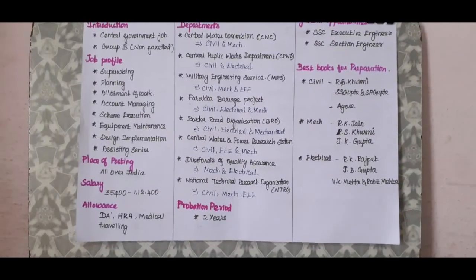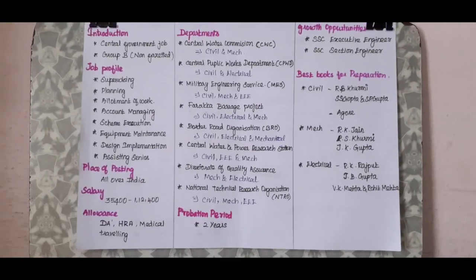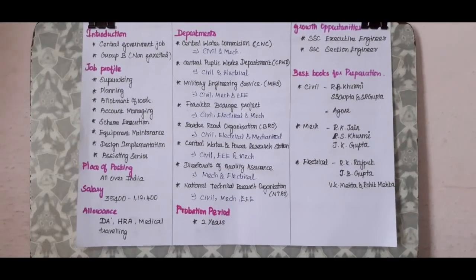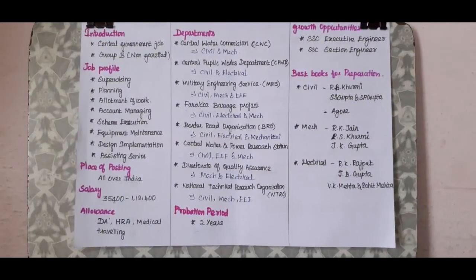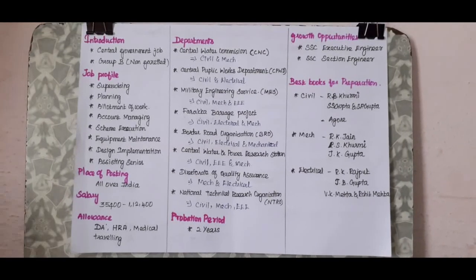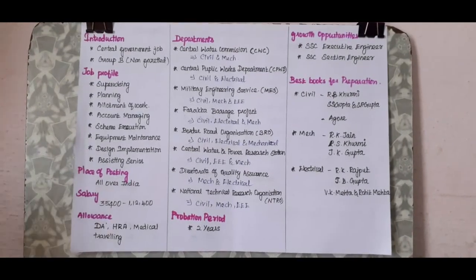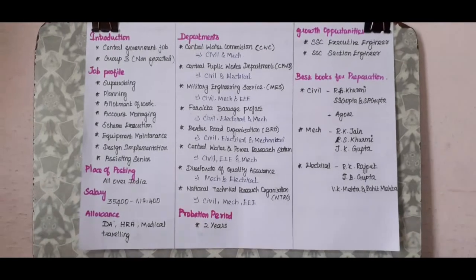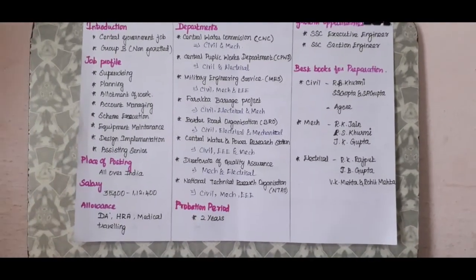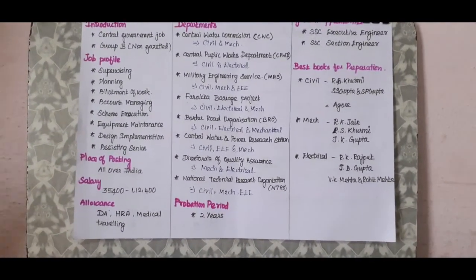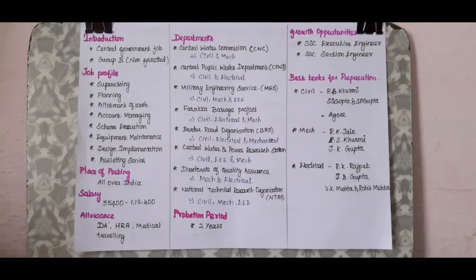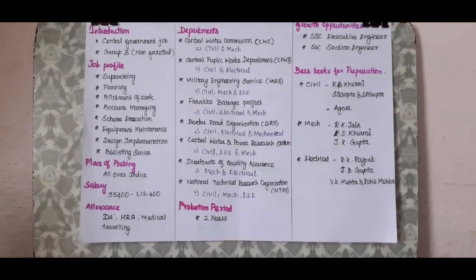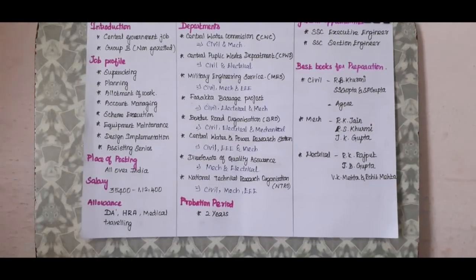Salary range: the pay scale goes up to 55,000 and with experience, you have a chance to get an enhanced salary. There are also allowances on the side — DNS allowance, house rent allowance, and medical allowance.